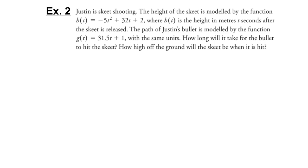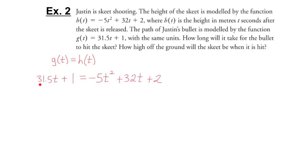We're going to find the point or points of intersection, because when the bullet hits the skeet, their heights and times are the same. We set g(t) equal to h(t): 31.5t plus 1 equals negative 5t squared plus 32t plus 2. This is our combined equation. Now solve this combined equation for t — pause the video and see if you can solve for t.